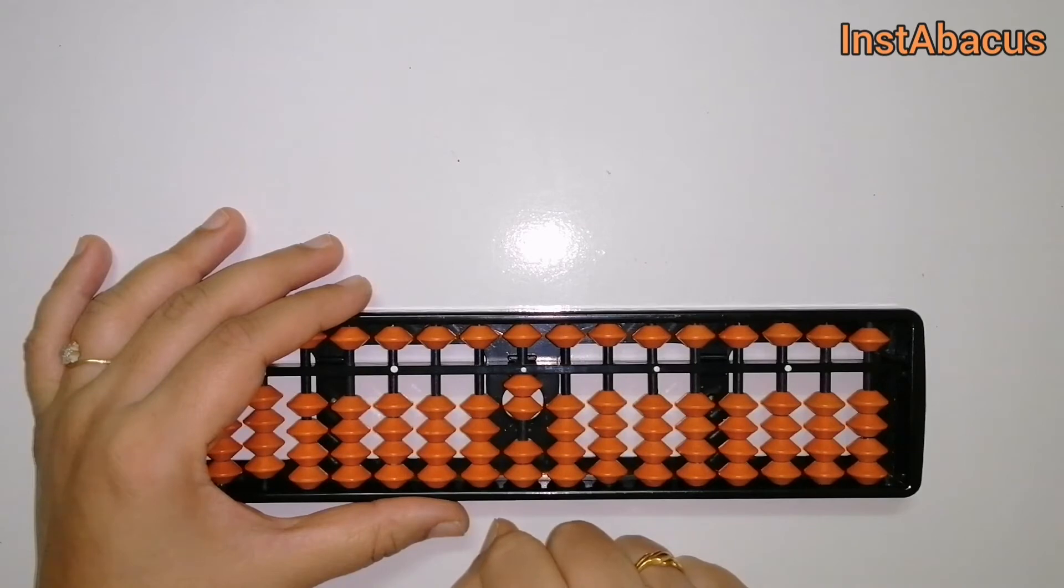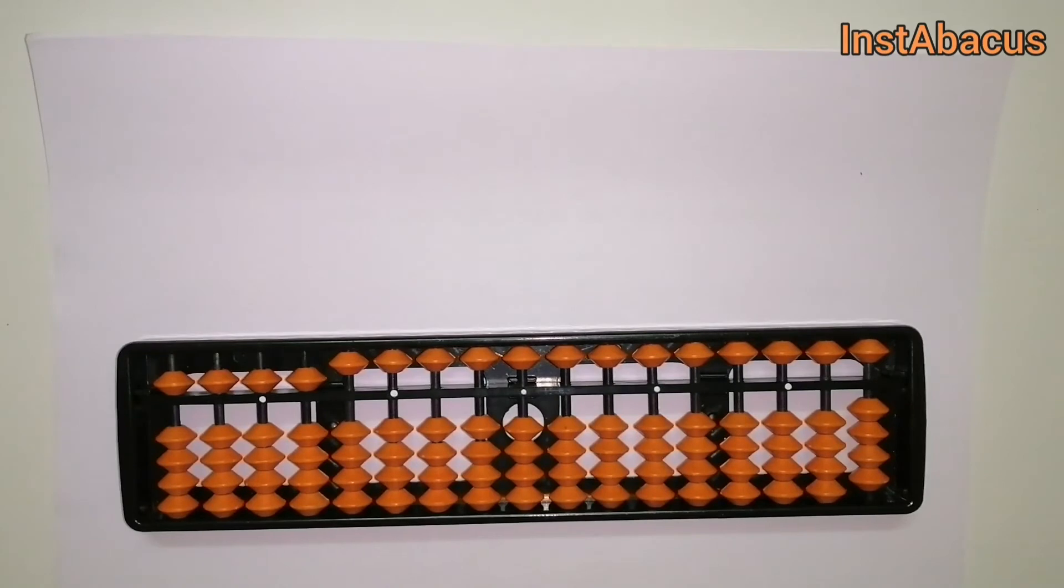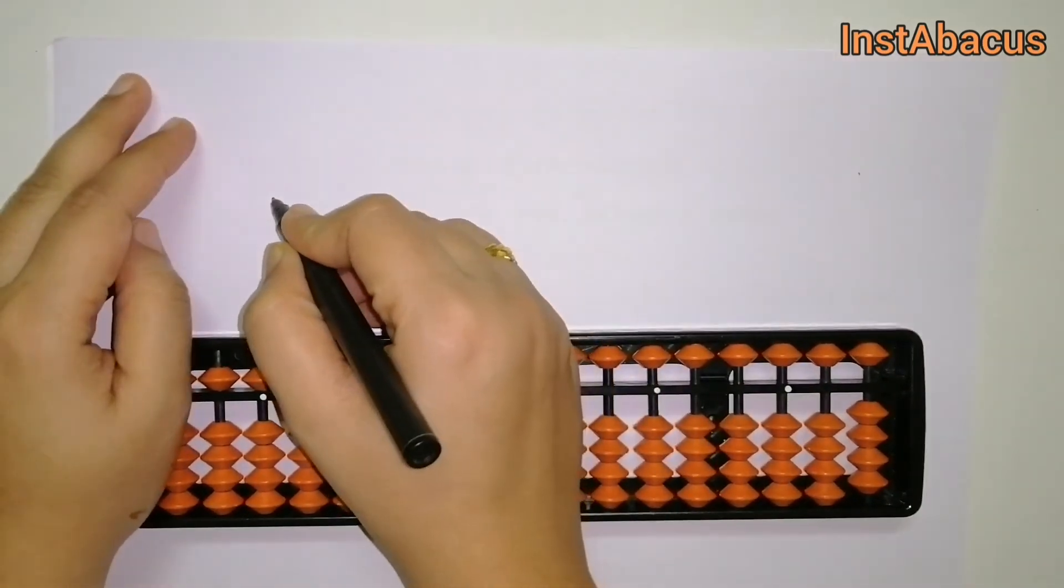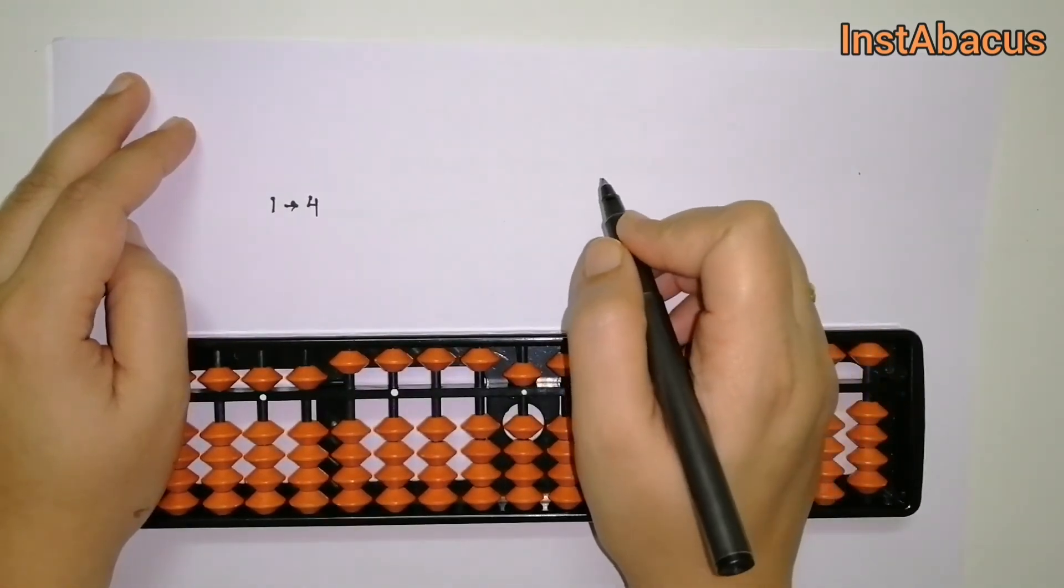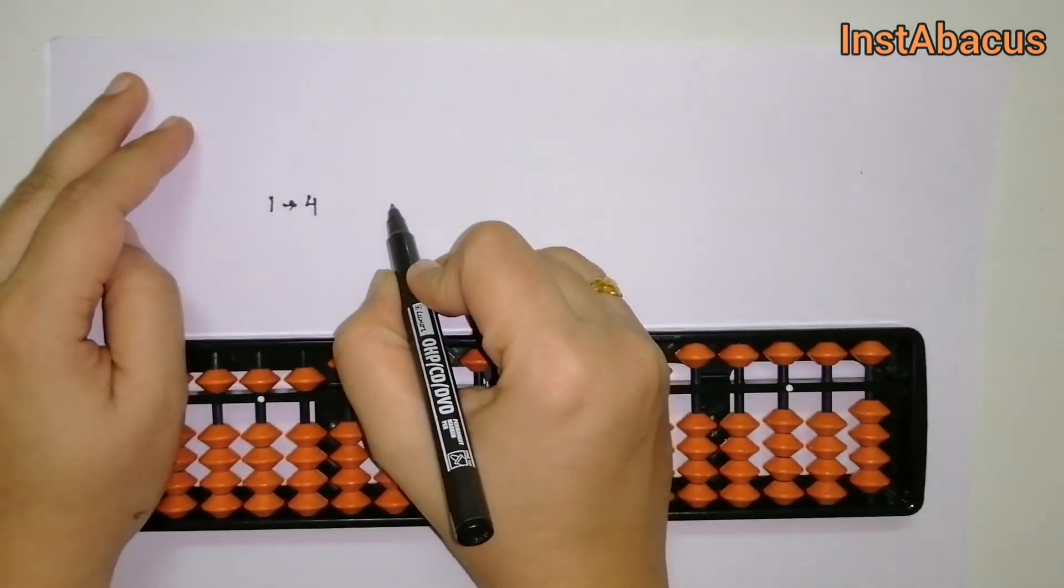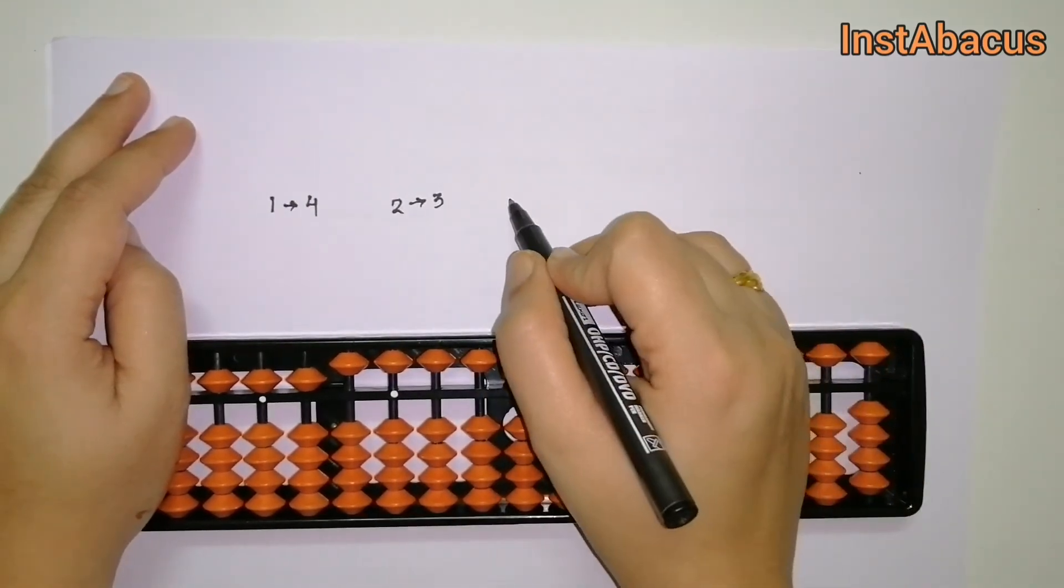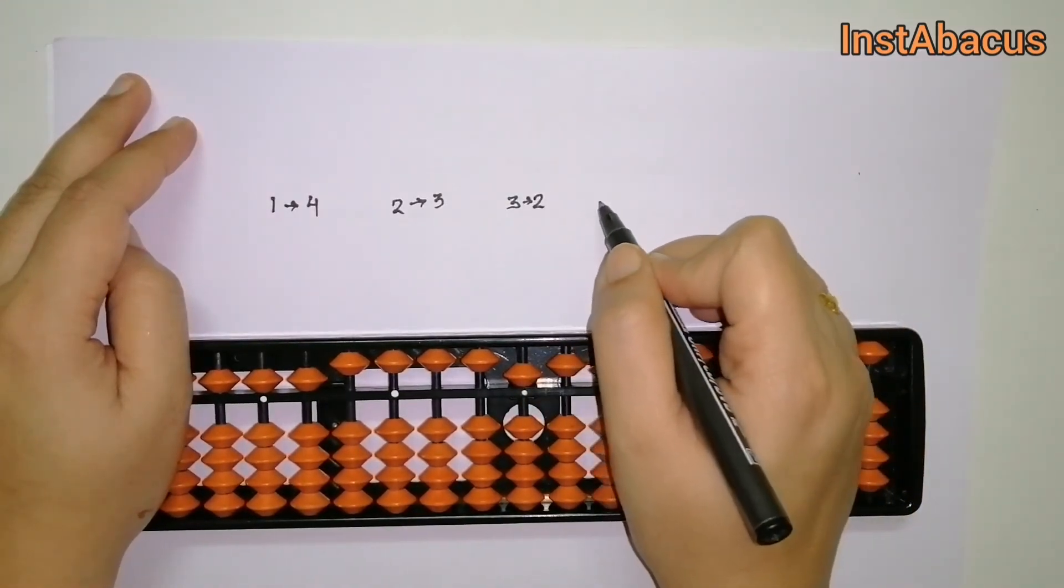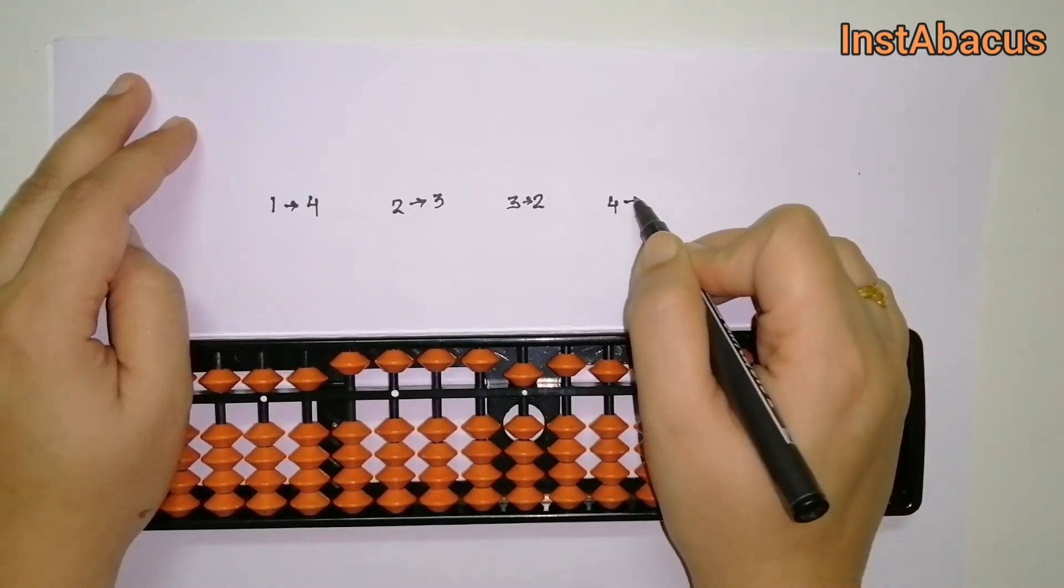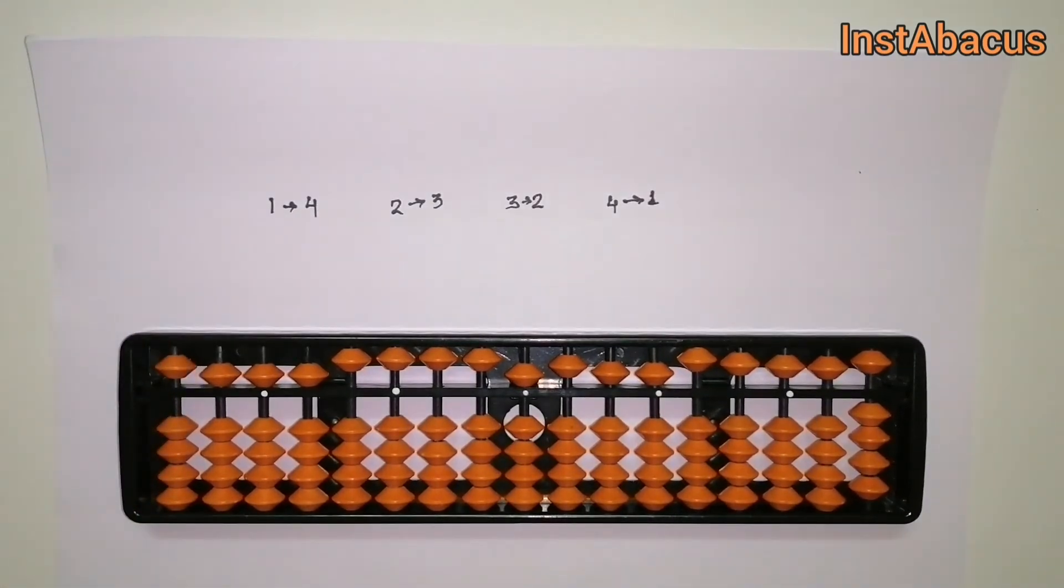Using these beads, the small friend of one is four. Let's write it down. Small friend of one is four, the small friend of two is three, the small friend of three is two, and the small friend of four is one. Now let me tell you, if you have noticed, all these numbers sum up to five.